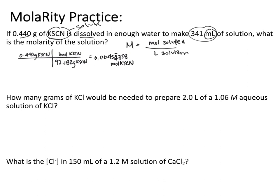Then we have 341 milliliters of solution. Moving the decimal gives us 0.341 liters. Putting those together, molarity equals moles of KSCN divided by liters, which gives 0.013277. With three significant figures, that's 0.0133 molar KSCN - the molarity of that solution.